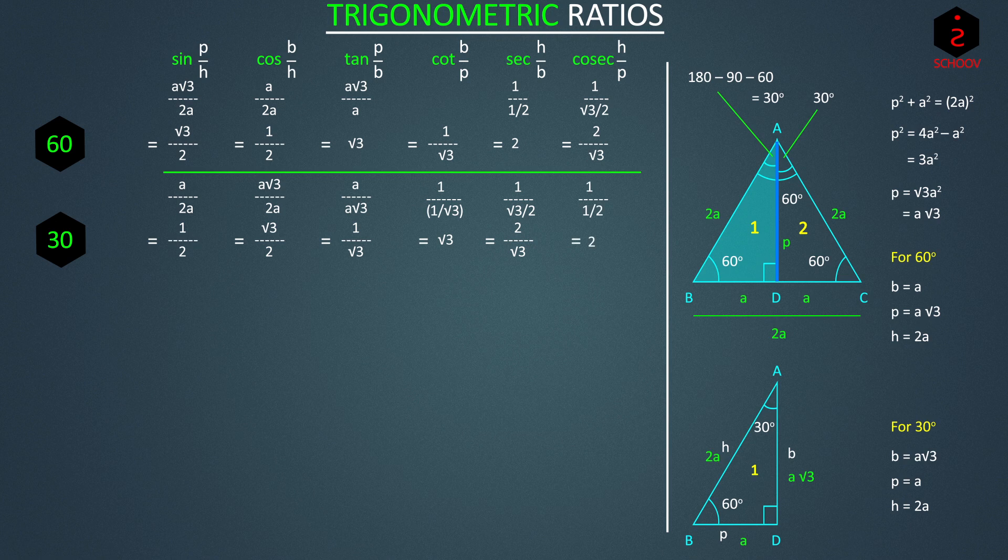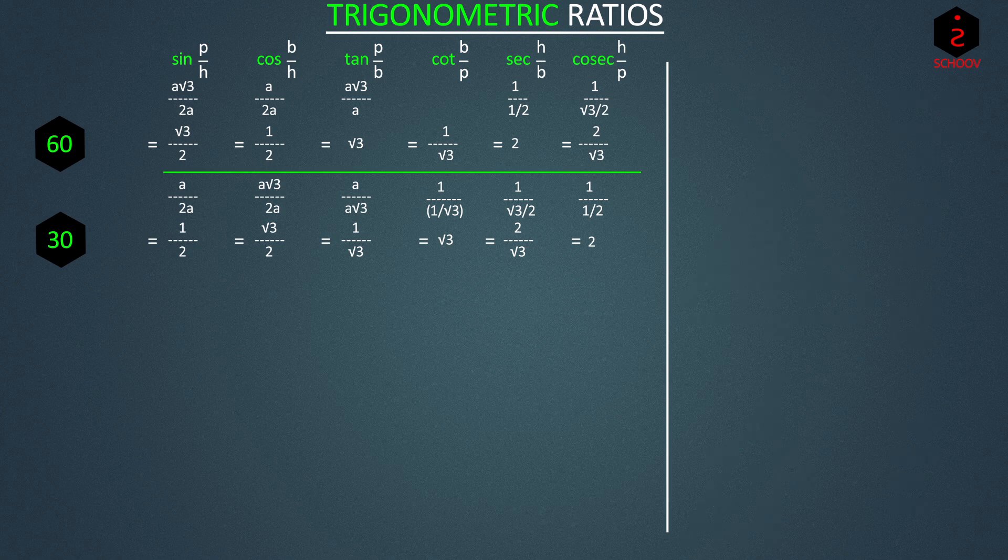So we have got the trigonometric ratios for angles 30 and 60. That was pretty easy, right? Assume one side of a right-angled triangle and find other sides. Then just calculate the ratios. And why do we take right-angled triangles? Because it's easy to find the sides, because we know Pythagoras' theorem, thanks to the awesome Greek mathematician. All right, let's move to 45 degrees.